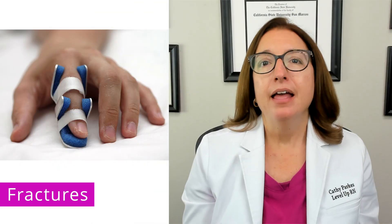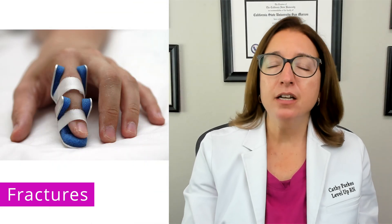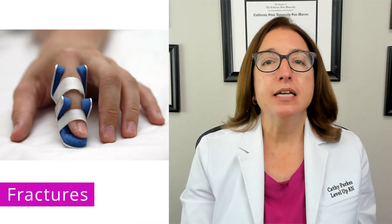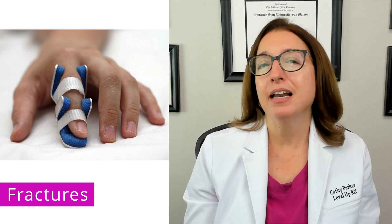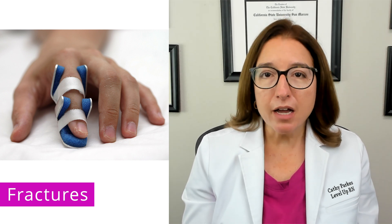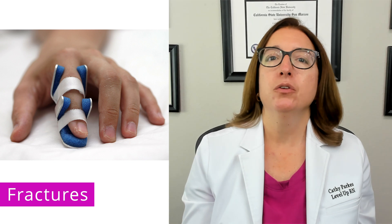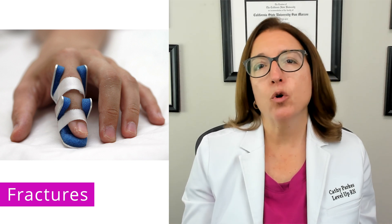There are several different options for setting or reducing a broken bone. A closed reduction with immobilization is where we set the broken bone without cutting the skin open. Examples of closed reduction include a splint, cast, or traction.